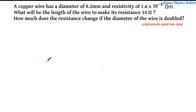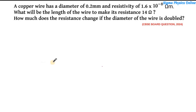Hello students, welcome back. Let's solve the next question. A copper wire has a diameter of 0.2 millimeter and resistivity of 1.6 × 10⁻⁸ ohm meter. What will be the length of the wire to make its resistance 14 ohm? How much does the resistance change if the diameter of the wire is doubled?